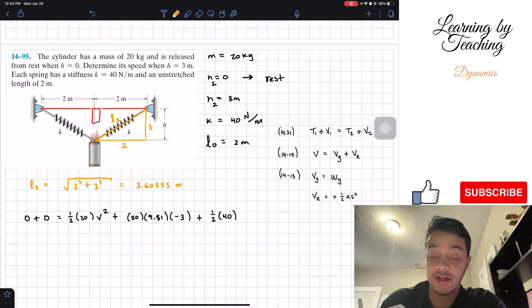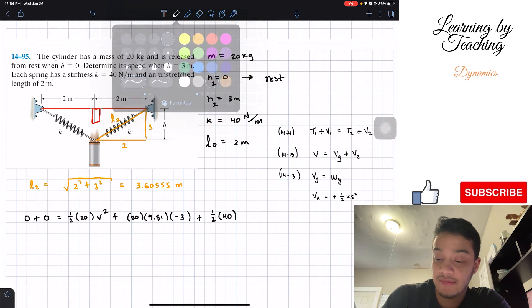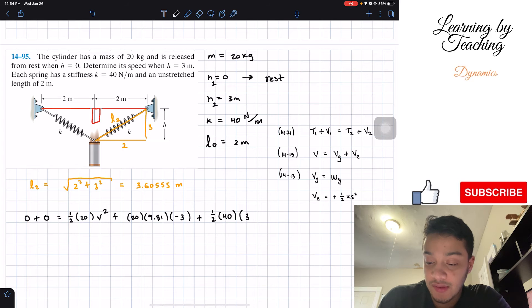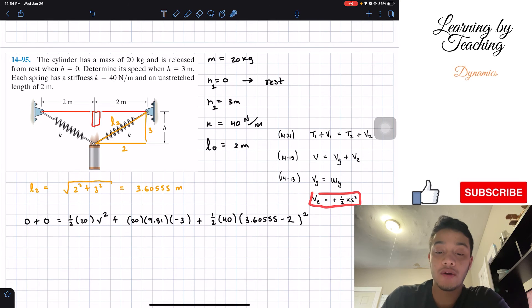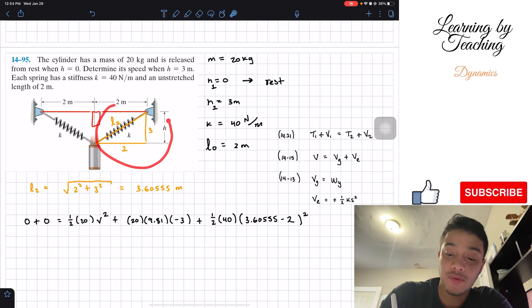So we have that amount of meters. If our unstretched length is two meters, then the stretched amount is the difference between these two, meaning that we will have times 3.60555 minus two squared. Now, this is the potential elastic energy of one of our springs. But we got two of them. We did the potential for this one. What about this one over here?